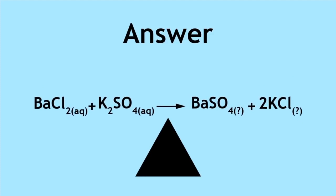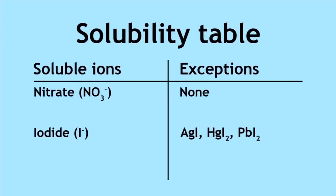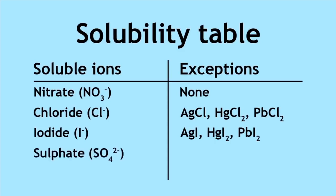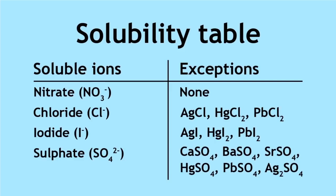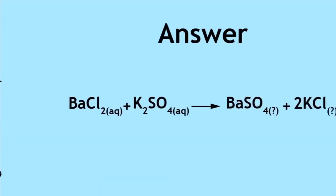Using the solubility table, we can see that almost all chloride salts are soluble in water. So potassium chloride in water forms an aqueous solution. Almost all sulfate salts are soluble, except for a few, with one of them being the barium sulfate precipitate. So the reaction equation, including all the state symbols, is...